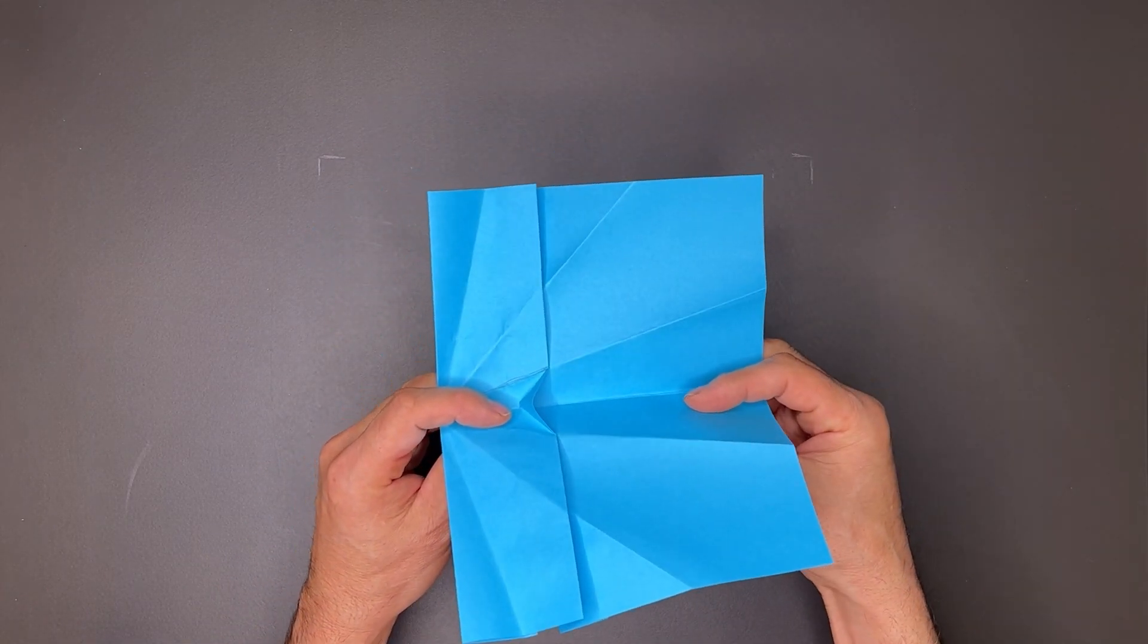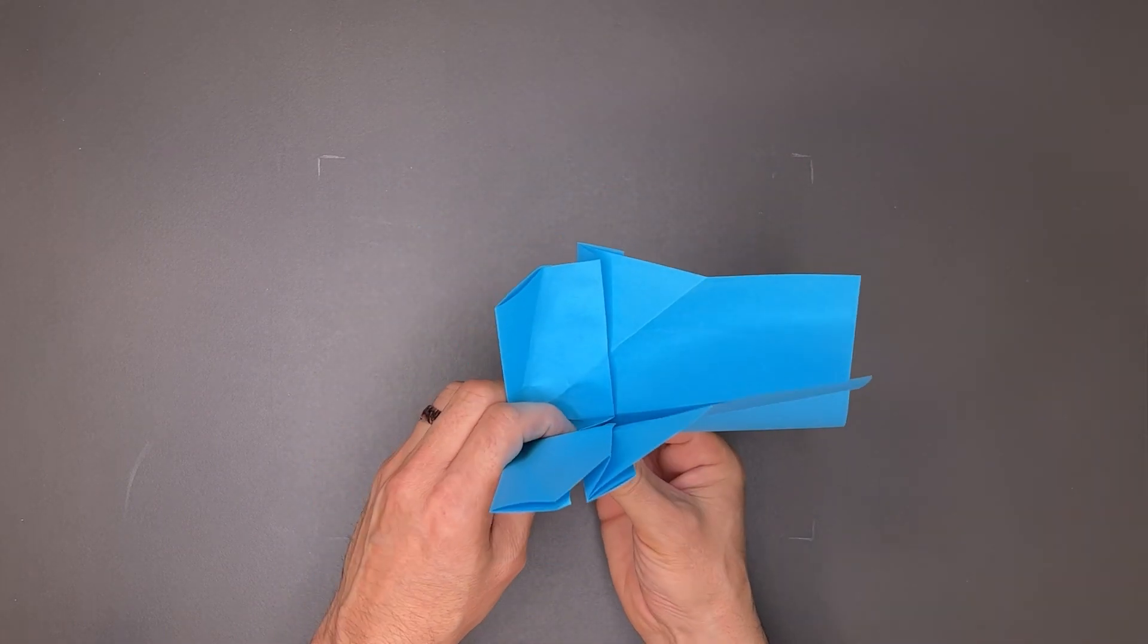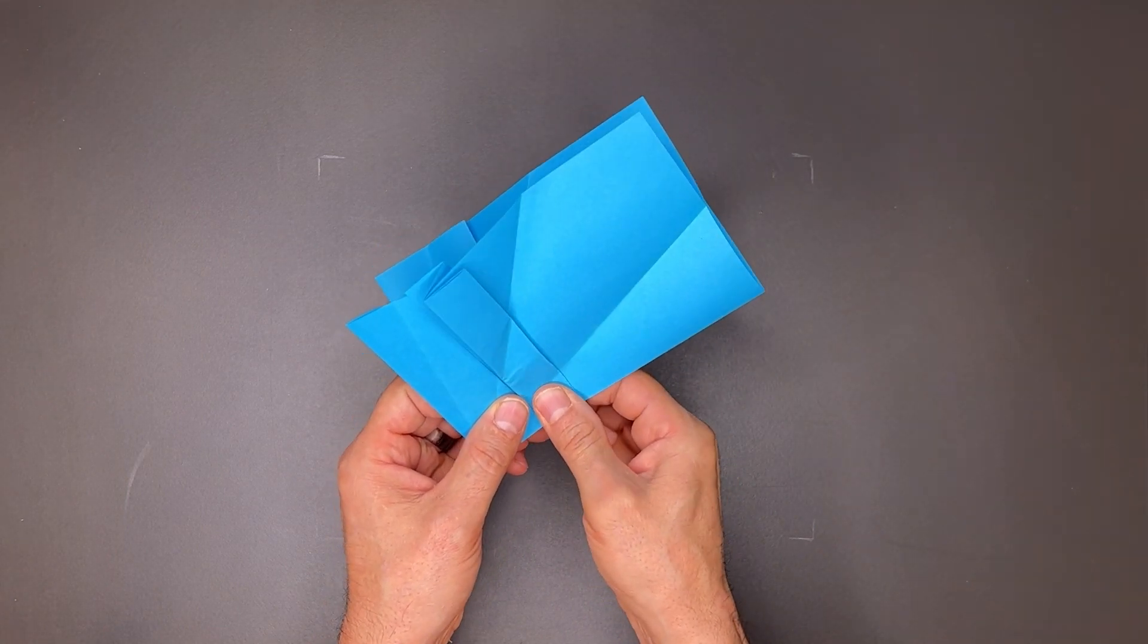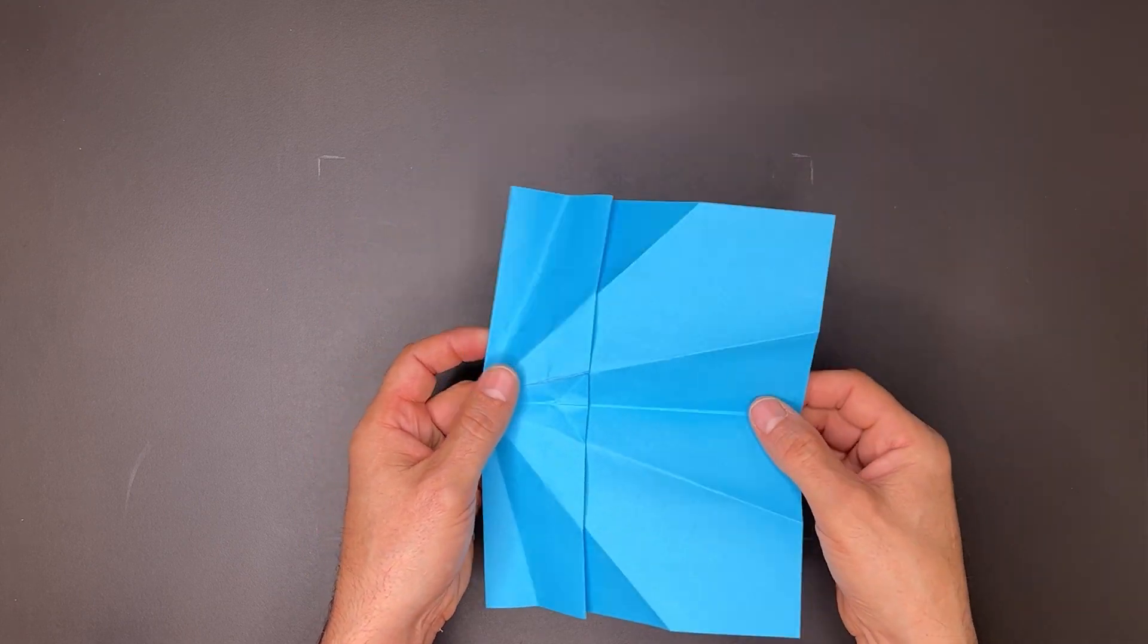And you'll notice as I start to close up the paper, that'll hinge forward. I let it do that and I push tight here to make sure that these creases go all the way to the bottom, and then I'll let it open all the way up.